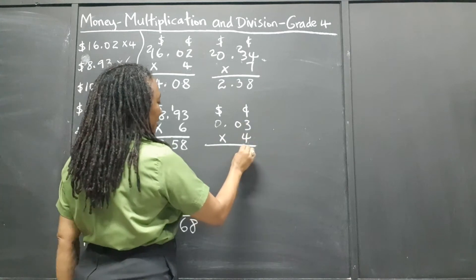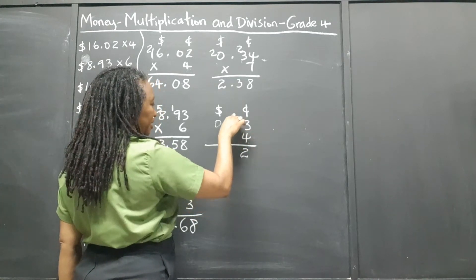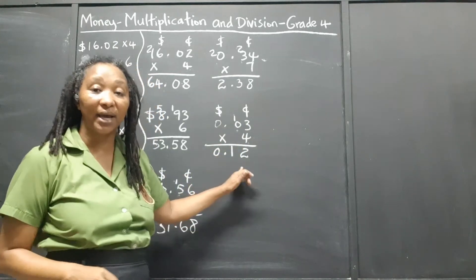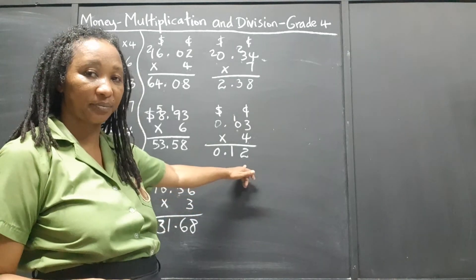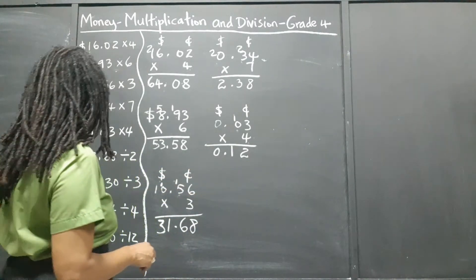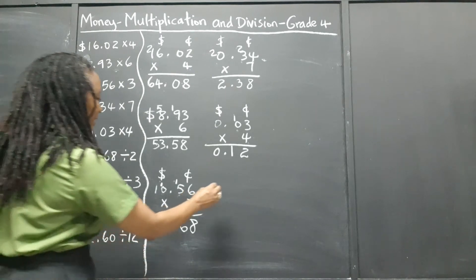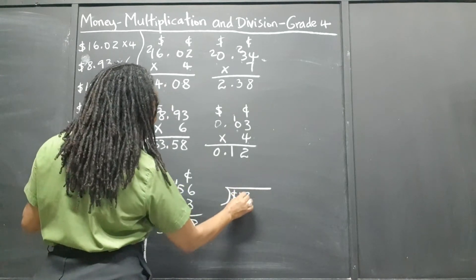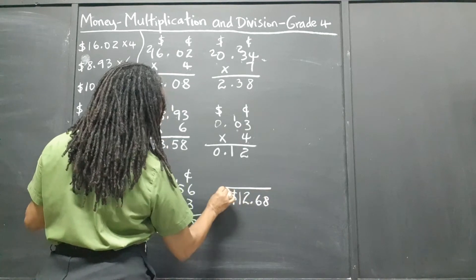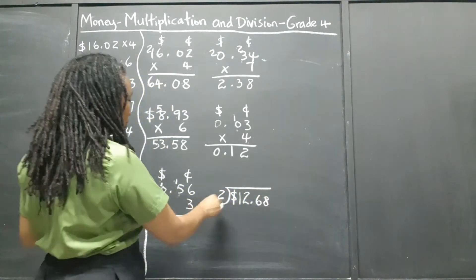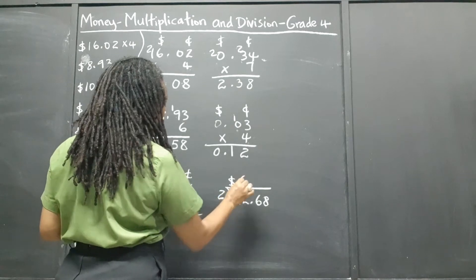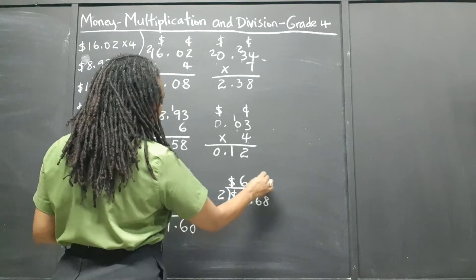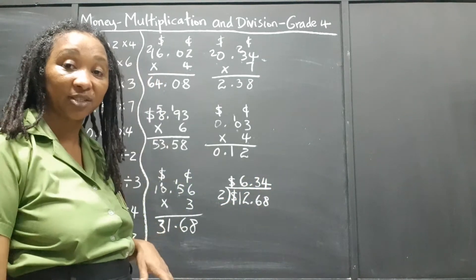For the division, the same principle as regular division. We have $12.68 divided by 2. 2 goes into 12 six times. 2 into 6 is 3 times. 2 into 8 is 4 times.